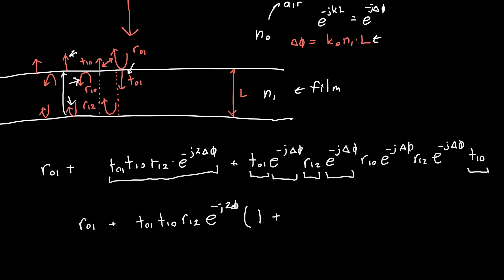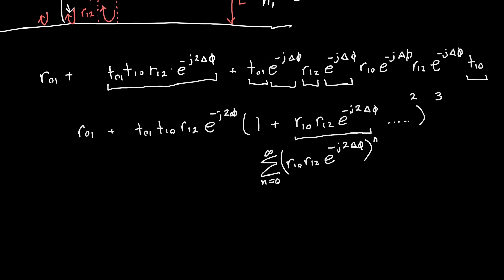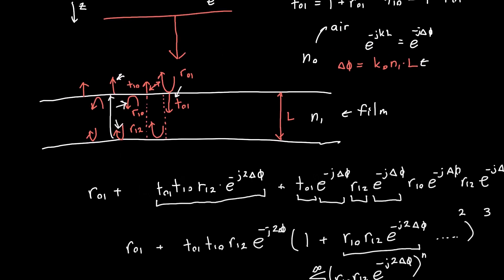If we keep adding more bounces, we just keep raising the term r10·r12·e^(−j·2·delta_phi) to higher powers, so we have an infinite geometric series summing from n=0 to infinity of (r10·r12·e^(−j·2·delta_phi))^n. As long as the magnitude of that term is less than 1, this series evaluates to 1/(1 − r10·r12·e^(−j·2·delta_phi)). So the total reflected amplitude is: r01 + t01·t10·r12·e^(−j·2·delta_phi) / (1 − r10·r12·e^(−j·2·delta_phi)).